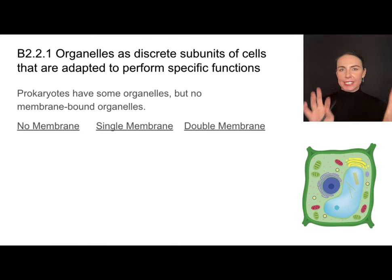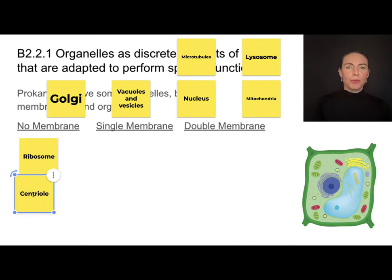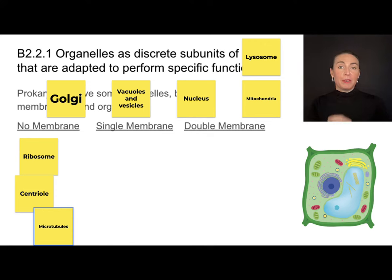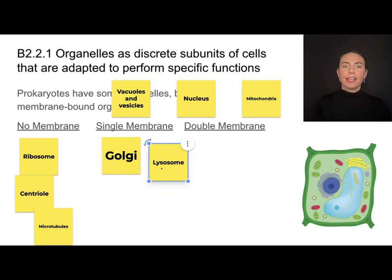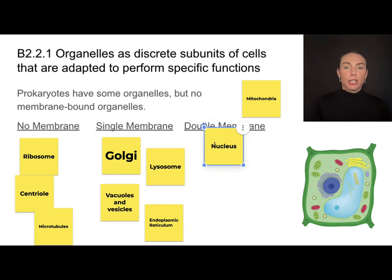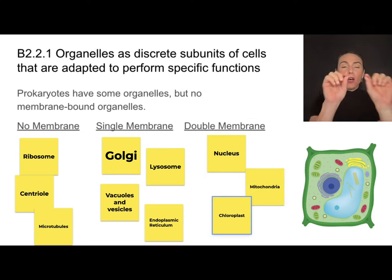So let's take a look at the different types of organelles and which ones have membranes. Things like ribosomes, centrioles, or microtubules do not have a membrane surrounding them. There are some structures that are membrane-bound by only one membrane, and that includes things like the Golgi apparatus, lysosomes, vacuoles and vesicles, and both the smooth and the rough endoplasmic reticulum. Things like the nucleus, the mitochondria, and chloroplast have not one but two membranes — they are double membrane-bound.